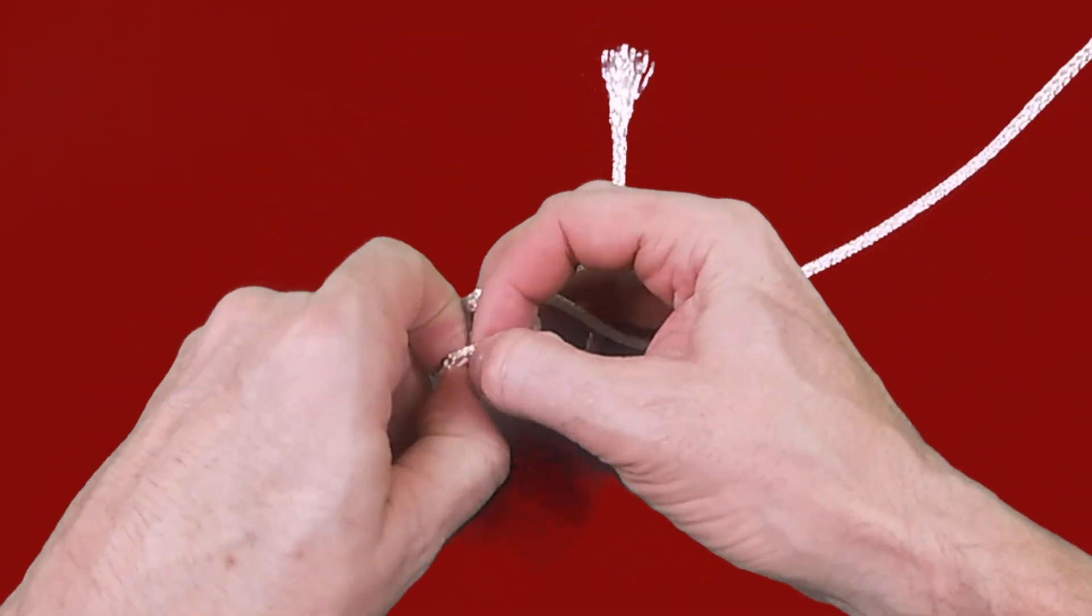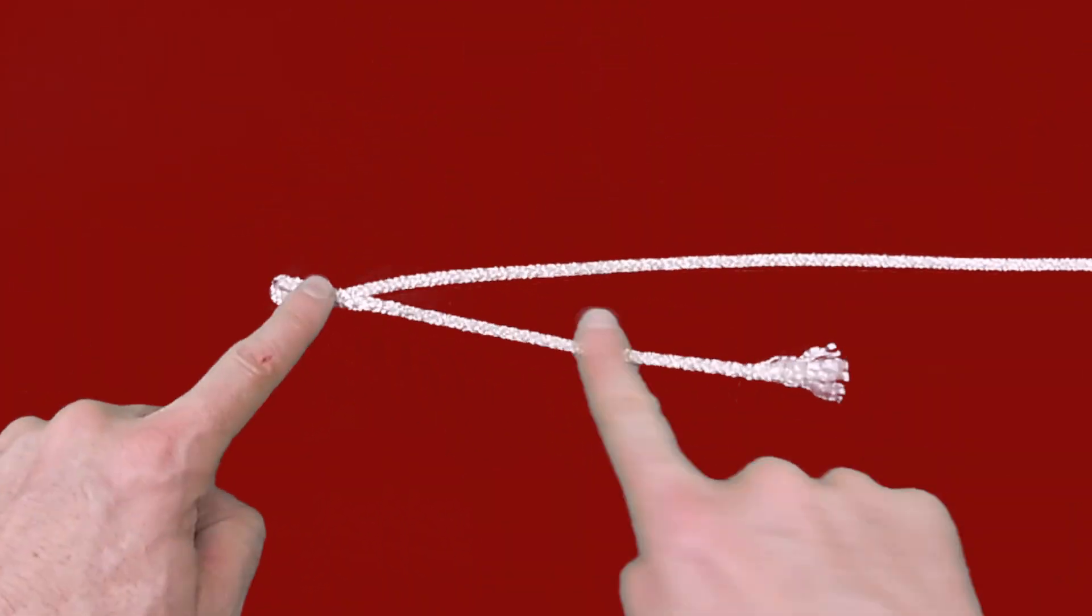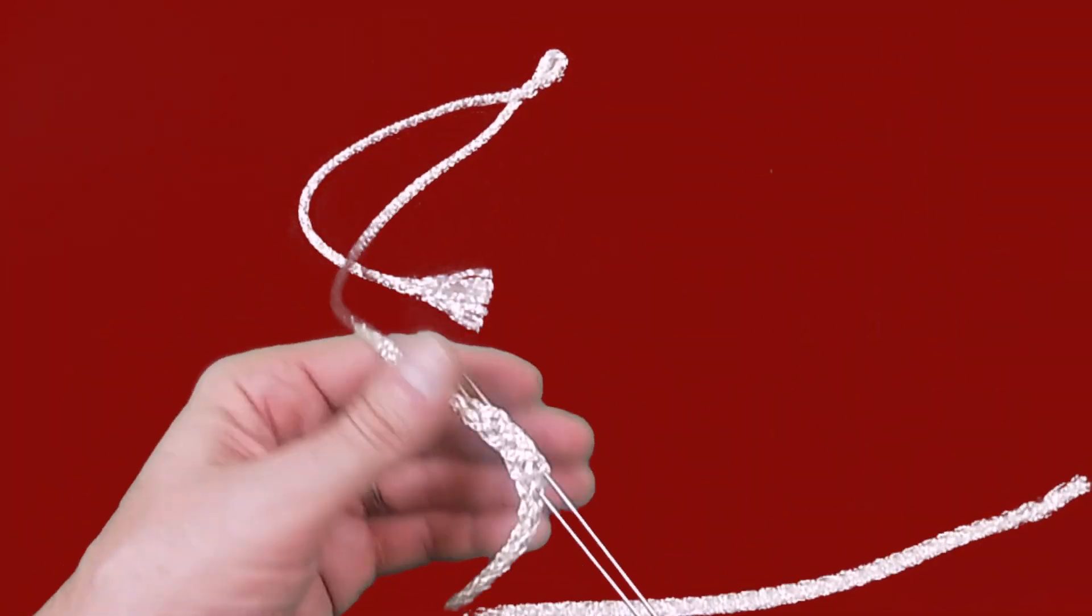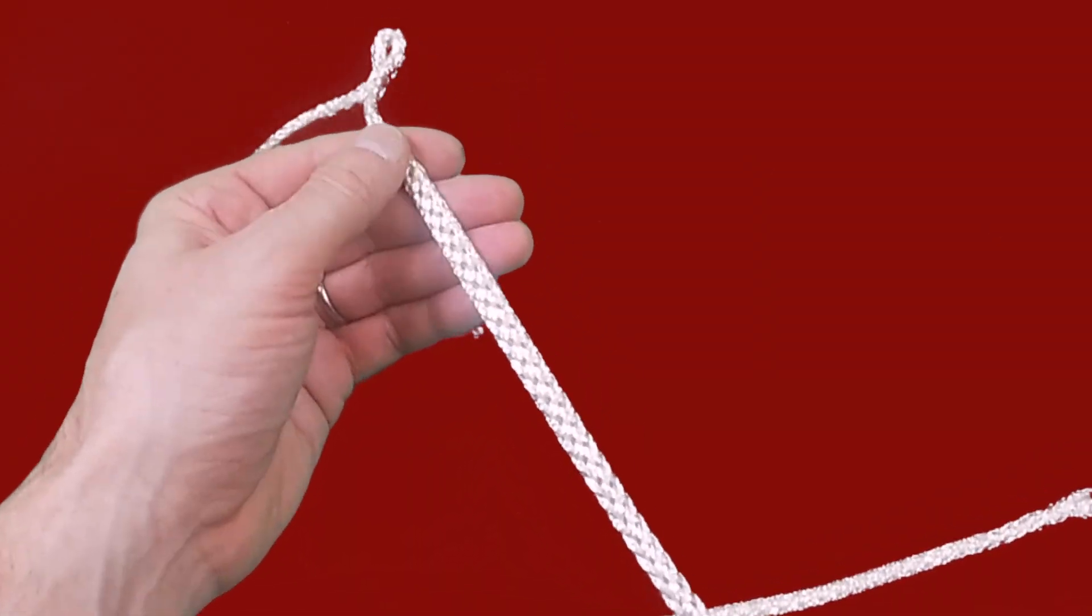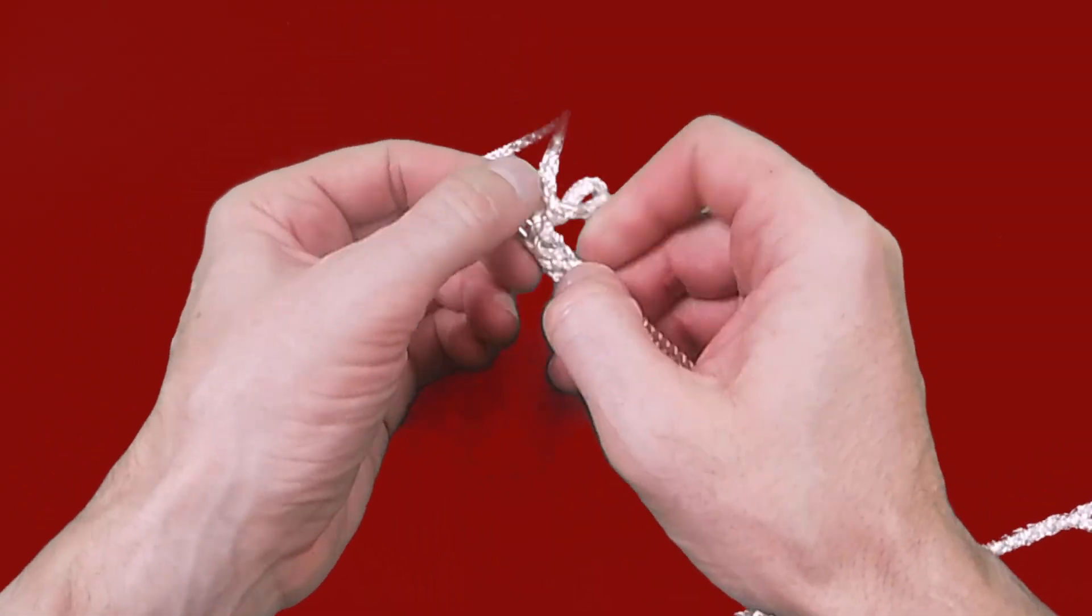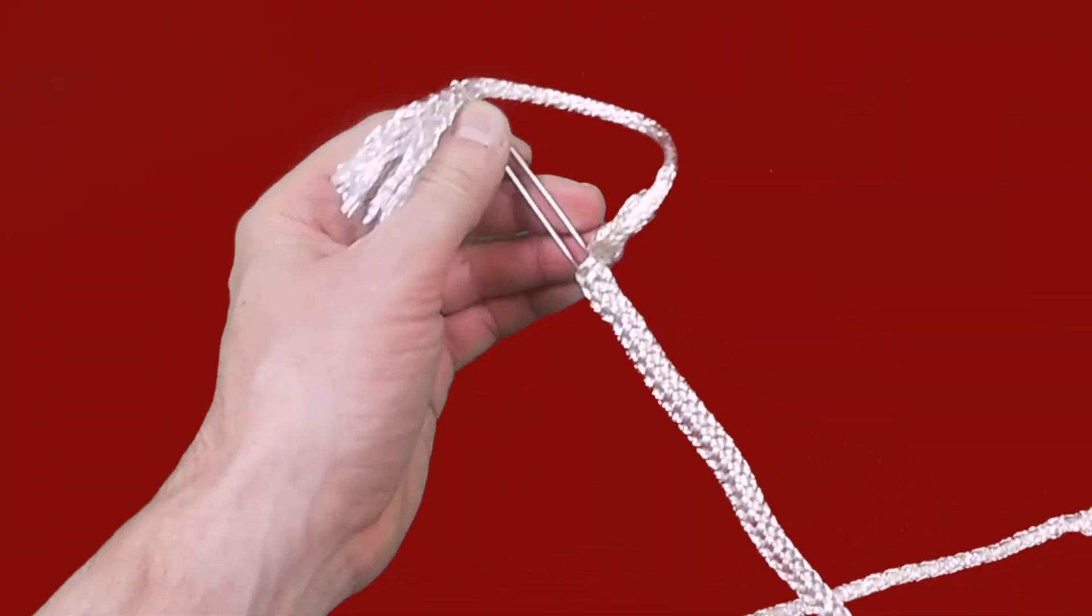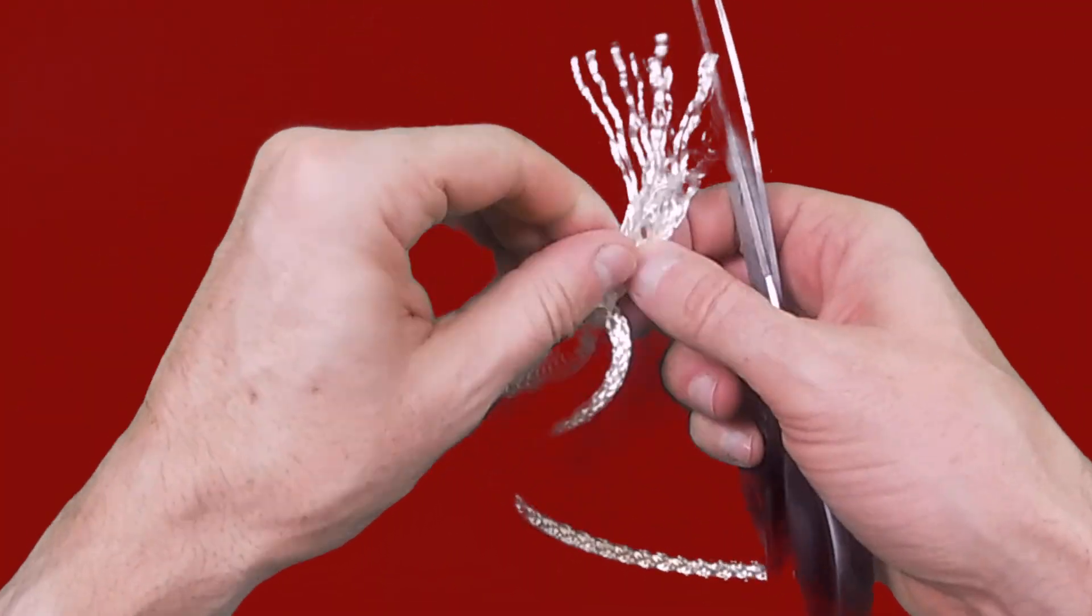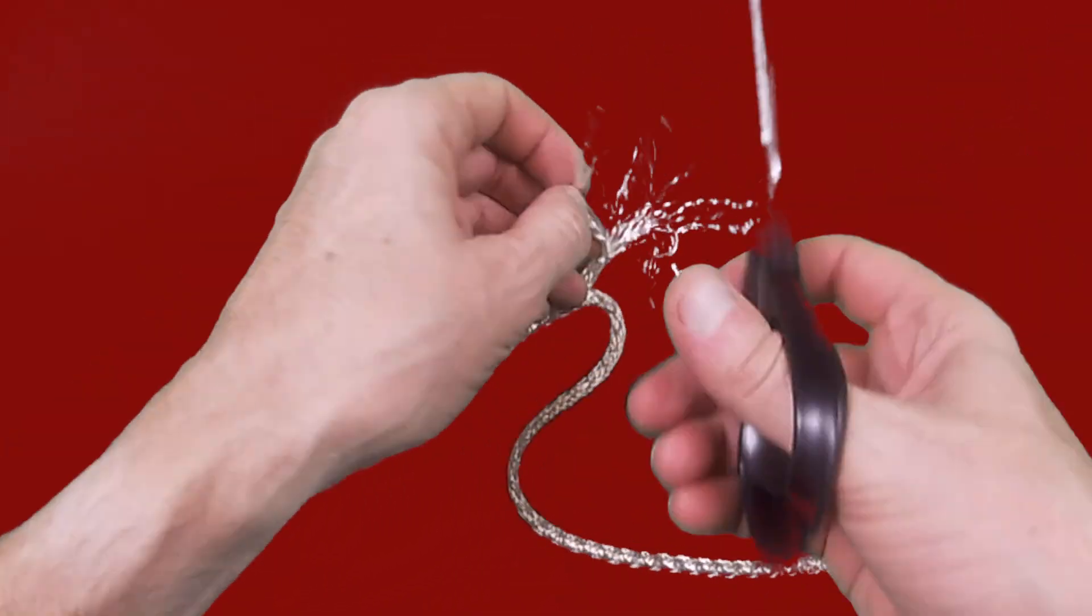The only difference is when we pulled the main line through the tail we used the splicing pick to create a larger hole due to the fact that we had to pull the first loop through the tail. Other than that creating the second splice is practically identical to the first.